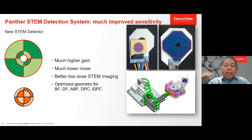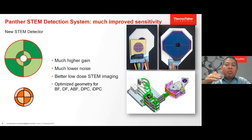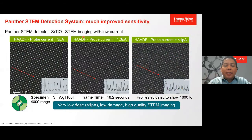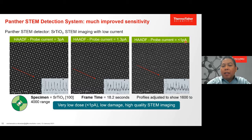A good detector is very important to produce a good STEM image. We need to make sure the detector can produce higher gains and lower noise so that the signal-to-noise ratio is quite high. This can be done using what we call the Panther STEM detection system. For example, this shows the strontium titanate high-resolution STEM image at different currents from 3 picoamperes to less than 1 picoampere. This new detector achieves a very nice signal-to-noise ratio even at low currents.